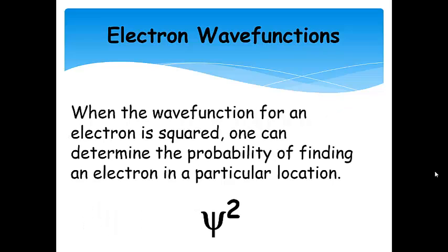When we square the wave function, we can determine where the electron will probably be in a certain volume. Squaring the wave function gives us a probability density, which provides information about the most likely places to find an electron in an atom.